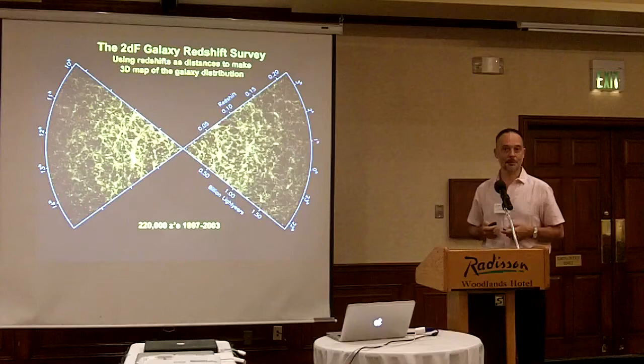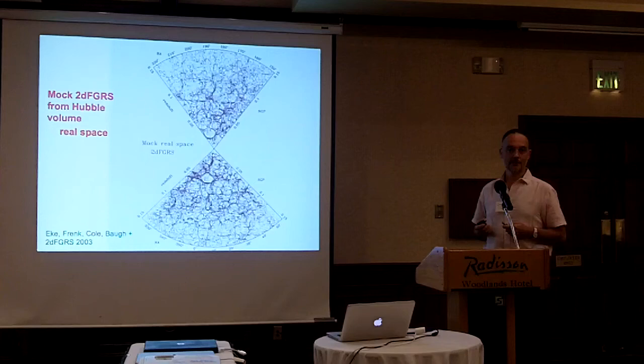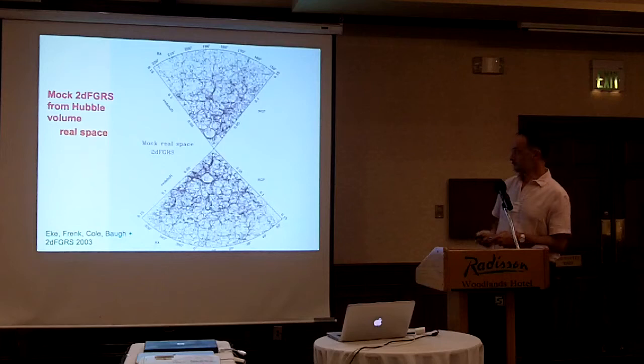So let's simulate what that survey would look like if there were no peculiar velocities — that is, if redshift was an exact measure of distance. It looks pretty similar, doesn't it? But what we'll see is two things when I turn on the velocities.